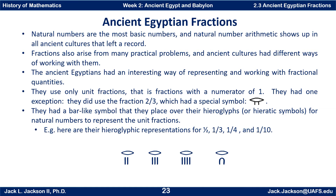They only used unit fractions — that is, fractions with a numerator of one. They had one exception: they did use the fraction two-thirds, which had a special symbol. For fractions, they had a bar-like symbol they placed over their hieroglyphic or hieratic symbols for natural numbers to represent unit fractions.